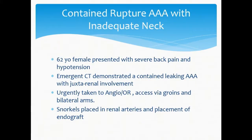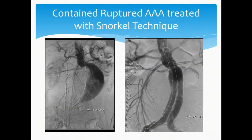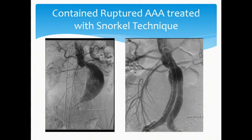This is a snorkel case. A 62-year-old female presented with severe back pain and hypotension — on Christmas Eve, ones you don't forget. Emergent CT demonstrated a contained leaking abdominal aneurysm that was juxtarenal. She was urgently taken to our angio-OR, where access was obtained through the groins and the arms. Snorkels were placed in the renal arteries. She certainly could have been treated surgically, but this was the essence of time. It worked out as a nice example of the snorkel technique.